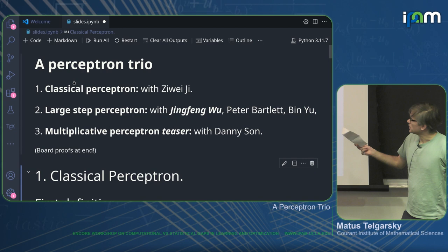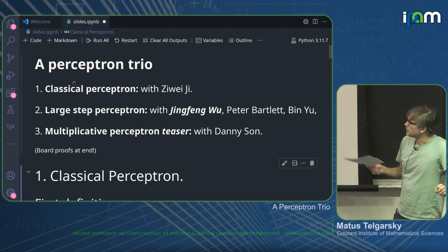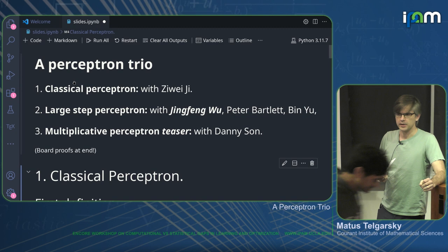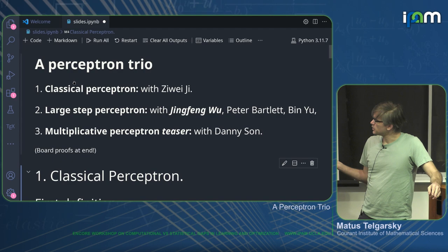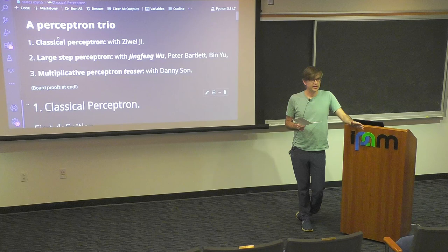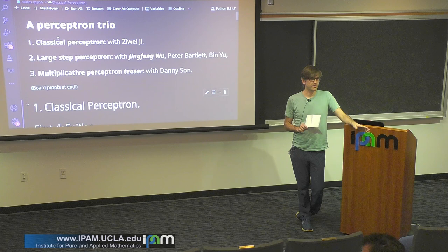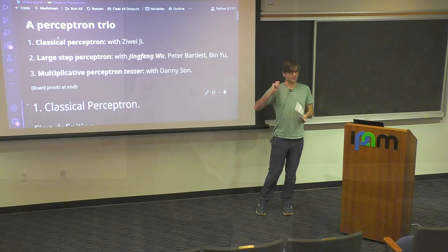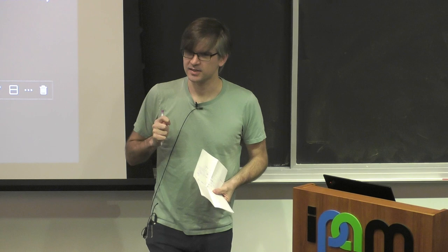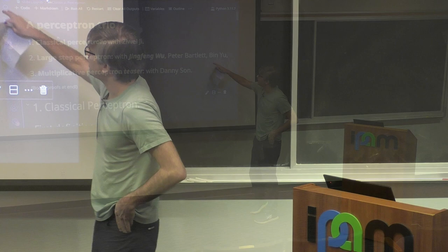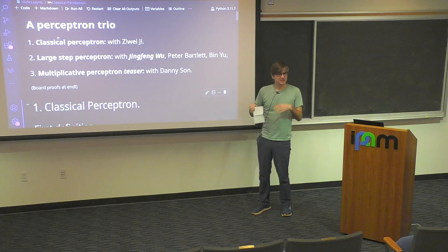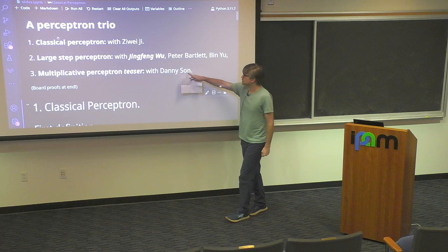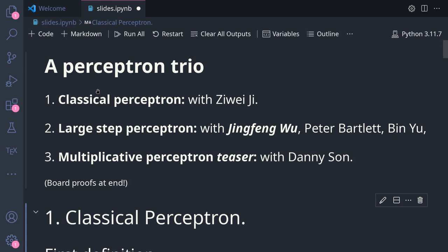The second paper is what I'm going to prove, and it's the majority of what I'm going to tell you about. This is a paper whose primary author was Jingfeng Wu, and it was just posted on Archive. This is a large step size analysis of logistic regression. Just to throw out two punchlines: it's SGD for logistic regression, it gets a 1/T rate, and the step size can be arbitrary — it makes no appearance on the right-hand side of the bound. You can set it to 10 to the 10 to the 10. It cancels.